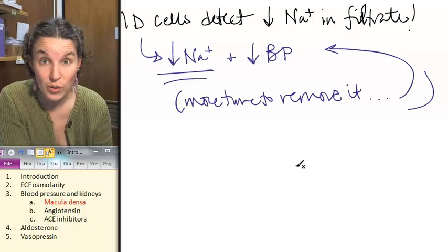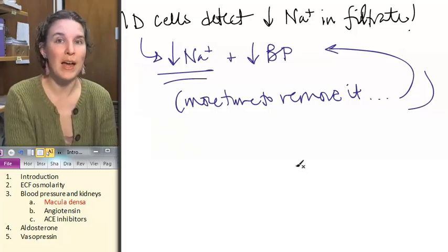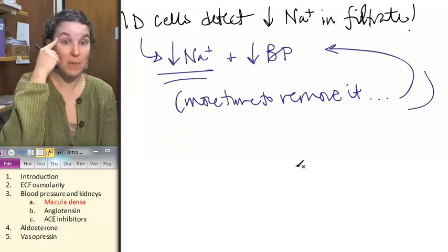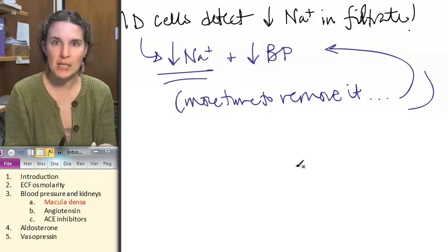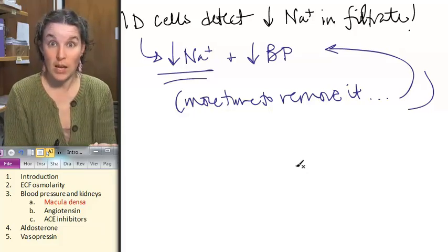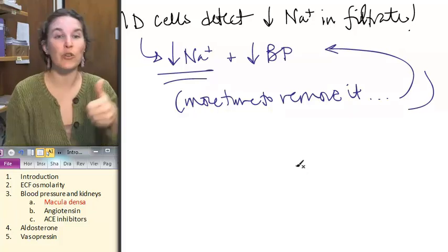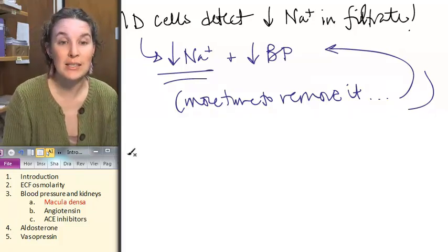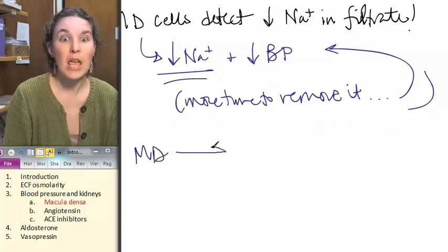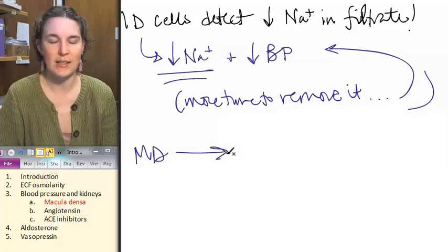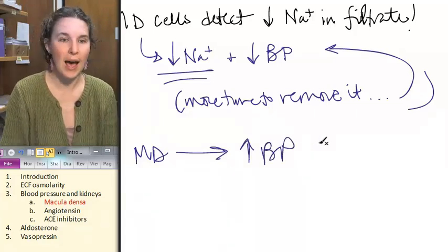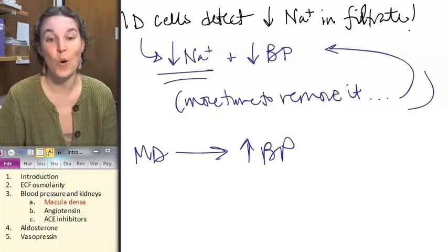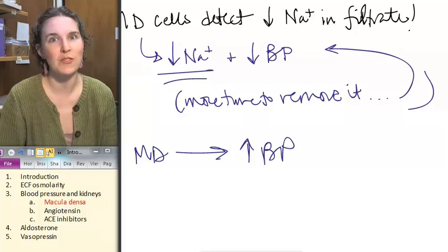Now, what do they do? If the message is, okay, low sodium, we must be having a blood pressure problem. Low blood pressure. Let's increase blood pressure. So the macula denser cells initiate a response to increase blood pressure. How do they do that? You know we're about to find out.